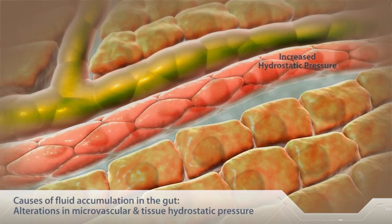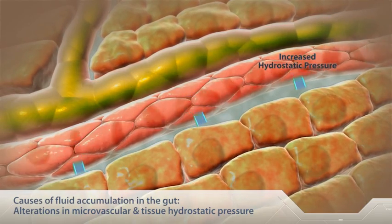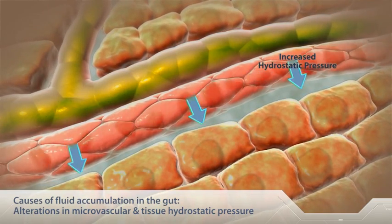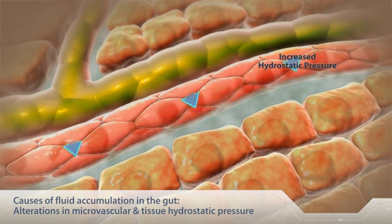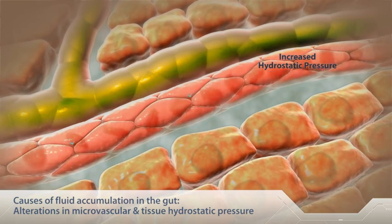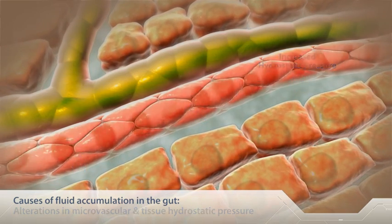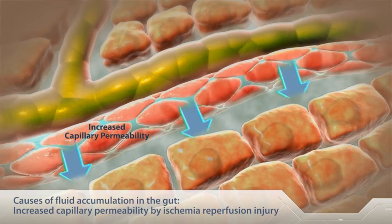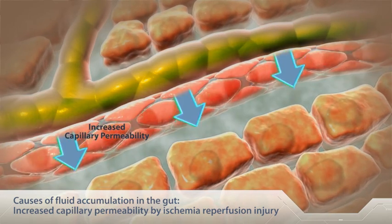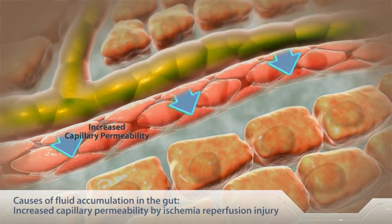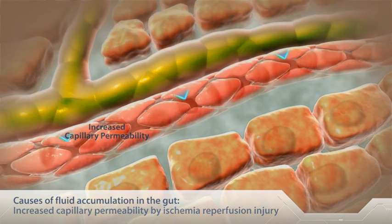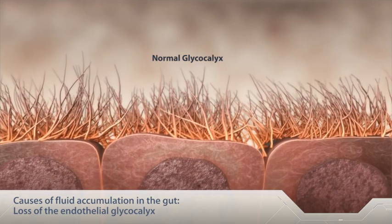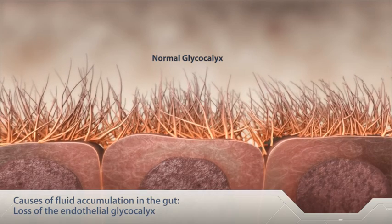Some of the causes of fluid accumulation in the gut include alterations in microvascular and tissue hydrostatic pressure, increased capillary permeability by ischemia reperfusion injury, and the loss of the endothelial glycocalyx.